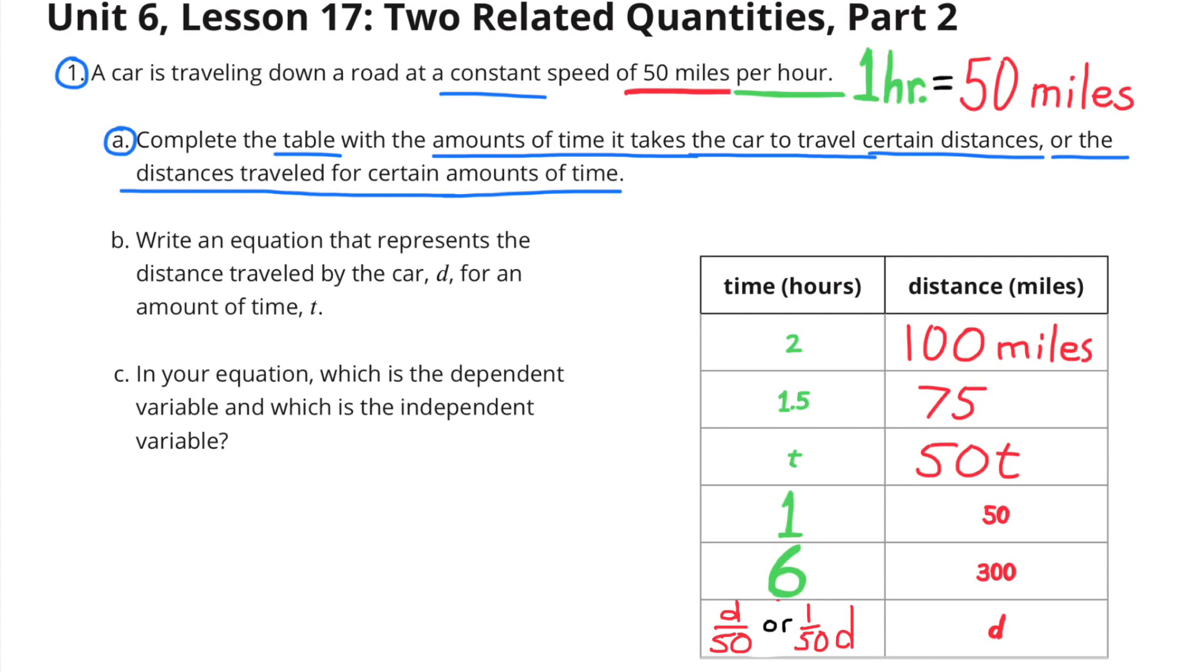Since the car travels 50 miles in one hour, 2 times 50, or 2 hours times 50 miles, would equal 100 miles. 1.5 times 50 would equal 75 miles. And T times 50 would equal 50T, or 50 times T.